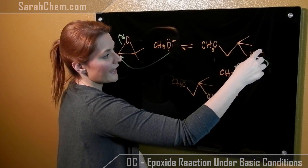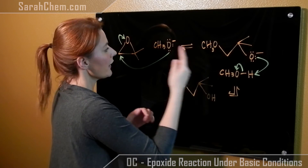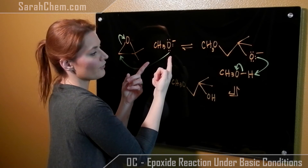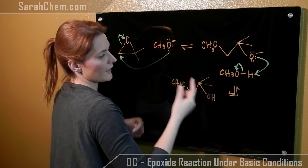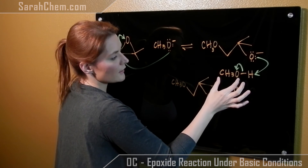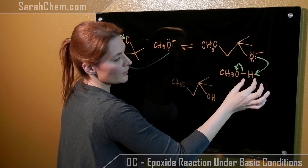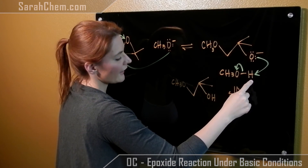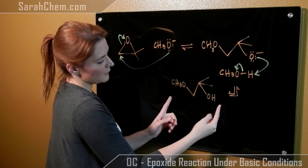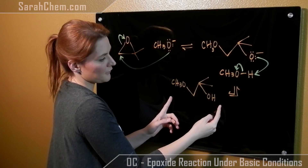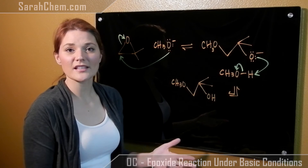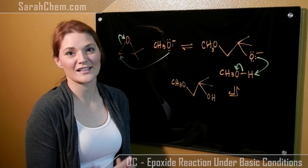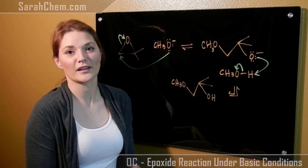Our O now has a negative charge on it, and because we're in a basic solution, we're going to reform the methoxide. The methoxide will be willing to lose that hydrogen to the oxygen's attack, and out we get this product. And that's all it takes to do a basic condition SN2 reaction on an epoxide.